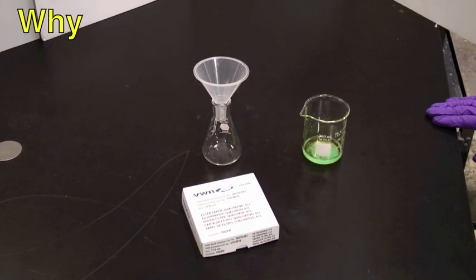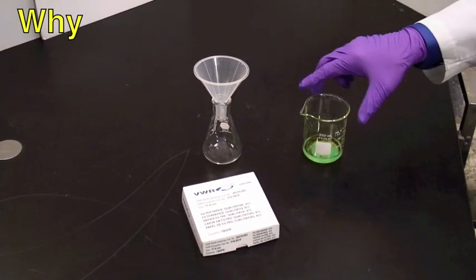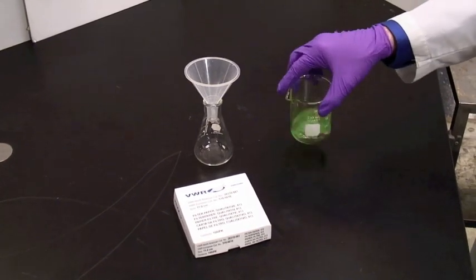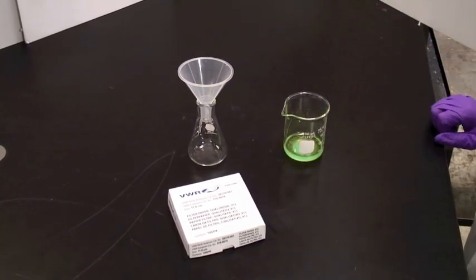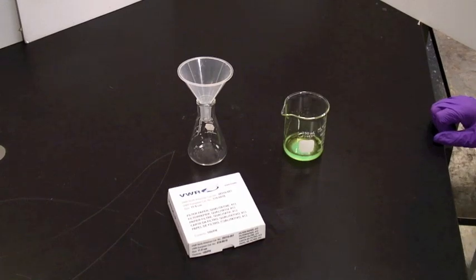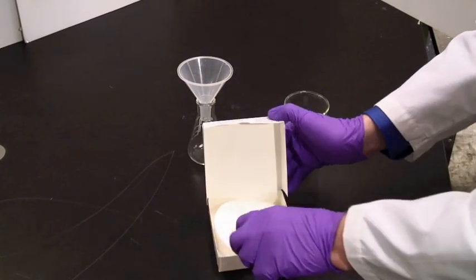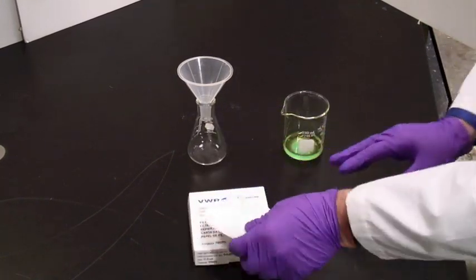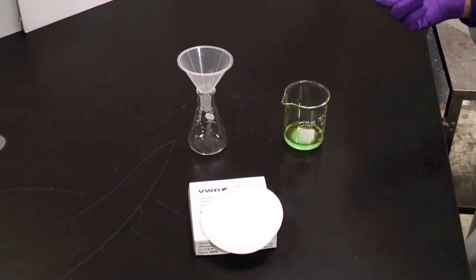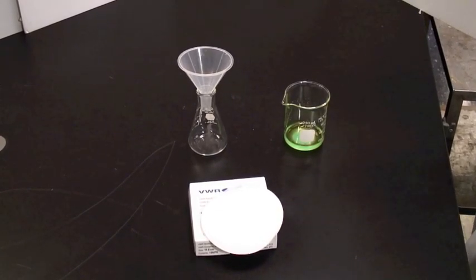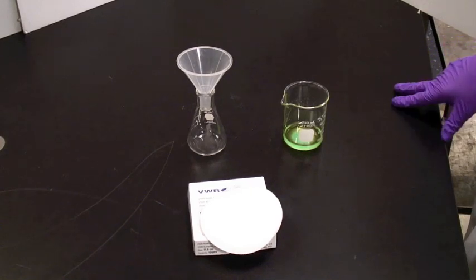Filtration is a separation process. Frequently you will have solids mixed with liquids, as we do here, and you want only one of the two. Pouring the mixture through a filter paper allows you to separate the liquids and the solids, keeping the solid behind and the filtrate, the liquid, coming through.